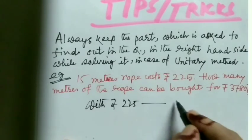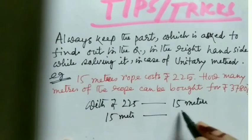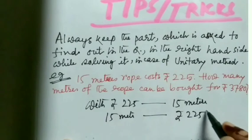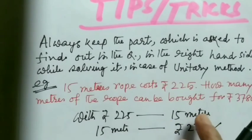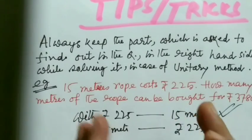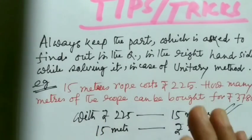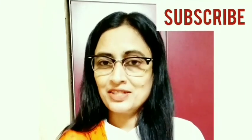We write: rupees 225 gives 15 meters. If we write '15 meters costs rupees 225' instead, that is wrong. Always keep the thing asked in the question on the right-hand side; otherwise, you cannot solve it and get the answer. So that's all for today. If you have any doubts, please share in the comment section below, don't forget to subscribe, and see you in my next video. Bye!